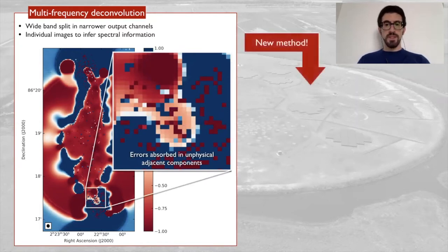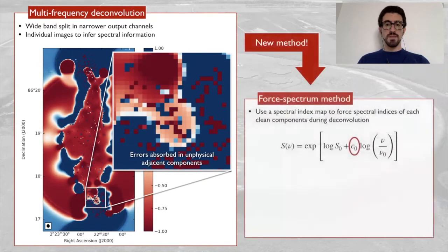To solve this problem we developed a new method known as force spectrum, which uses spectral index maps to force spectral indices of each clean component during the deconvolution.